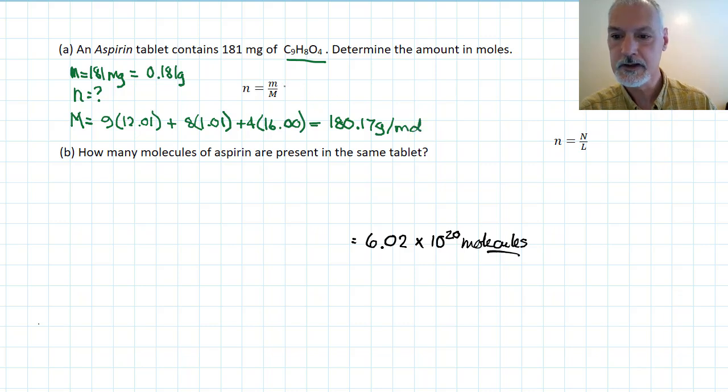So, putting in our numbers, we have 0.181 grams on the top. 1 mole weighs 180.17. Solve, and with 3 significant digits, I'll put the zeros in that should be there, and I get the number of moles.